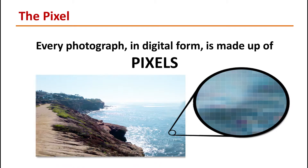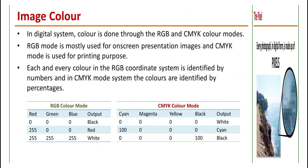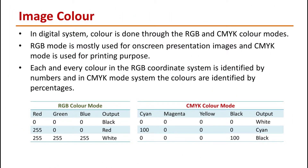Digital images are actually mosaics of millions of tiny squares called picture elements, or just pixels. The computer divides the screen or image into a grid of pixels. If you expand the image, you can see tiny squares that form the picture. Images consist of color also, done through RGB and CMYK. C stands for cyan, M for magenta, Y for yellow, and K stands for black.